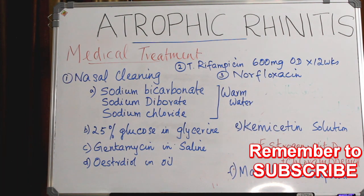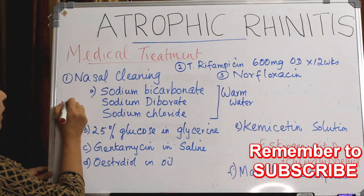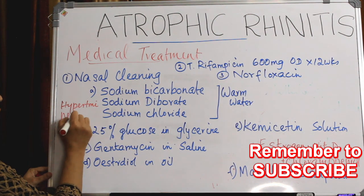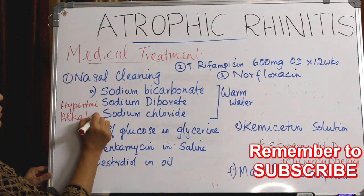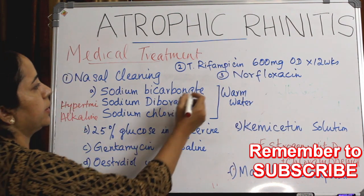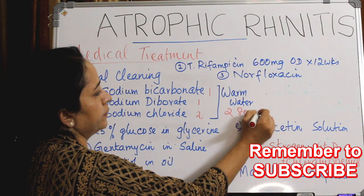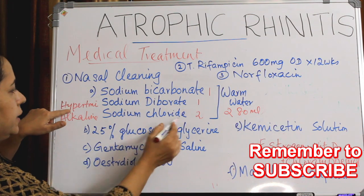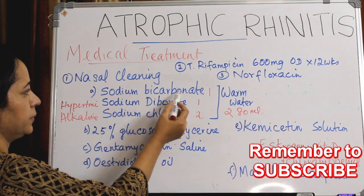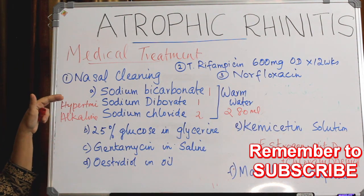The most commonly used solution is hypertonic as well as alkaline. It contains sodium bicarbonate, sodium diborate, and sodium chloride in the ratio of 1:1:2 in 280 ml of warm water. Sodium chloride is in greater amount to make it hypertonic. These three components in the ratio 1:1:2 added in 280 ml of warm water give very good results.